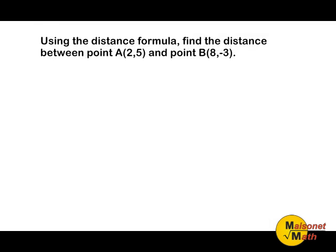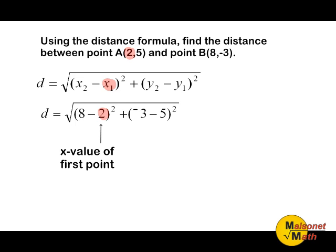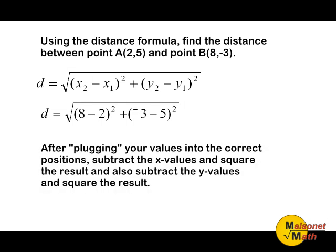The distance formula is really just a variation of the Pythagorean theorem. The first thing that we are going to do is plug in all the corresponding values to their appropriate variable within the equation. x sub 2 represents the x value of our second point — in this case, positive 8. x sub 1 represents the x value of our first point — in this case, positive 2. y sub 2 represents the y value of our second point, which is negative 3. And y sub 1 represents the y value of our first point, which is positive 5. After plugging your values into the correct positions, subtract the x values and square the result, and also subtract the y values and square the result.